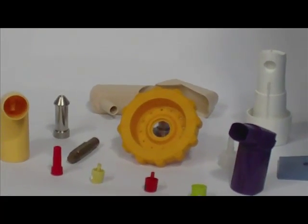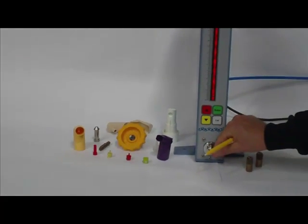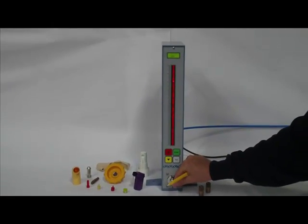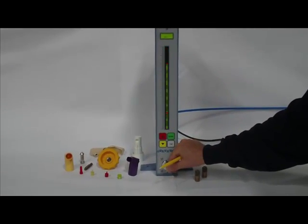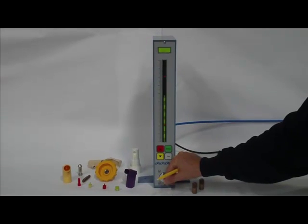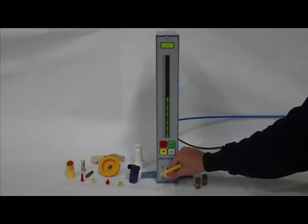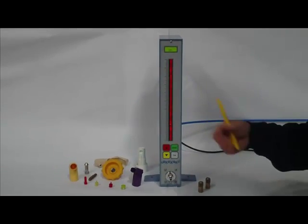In other words, we detect back pressure. So as the air blows through the orifice, the system will then measure the restriction, the back pressure, and then give the absolute size.